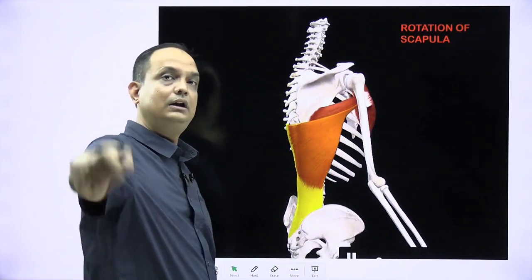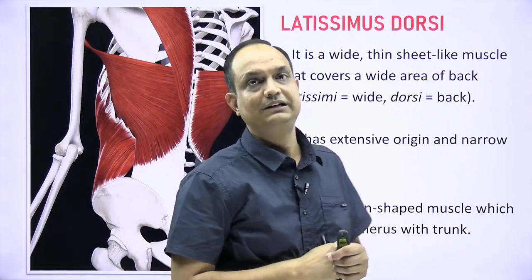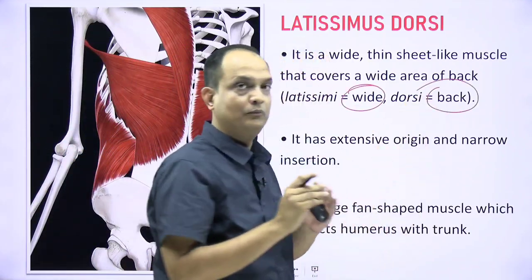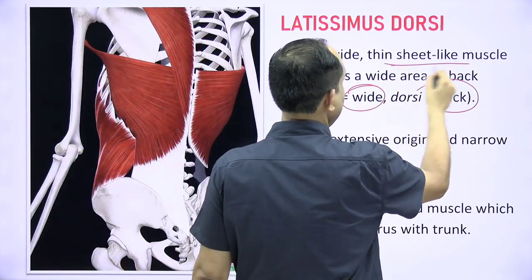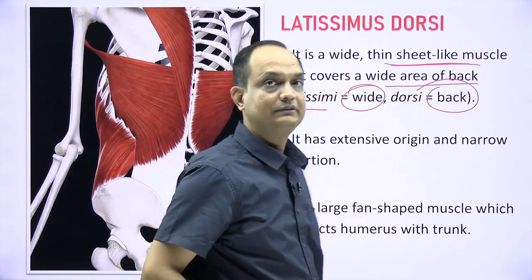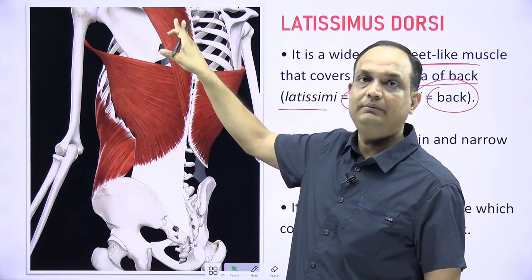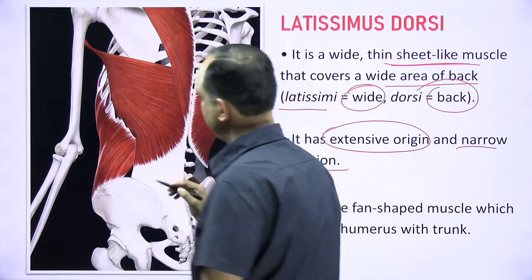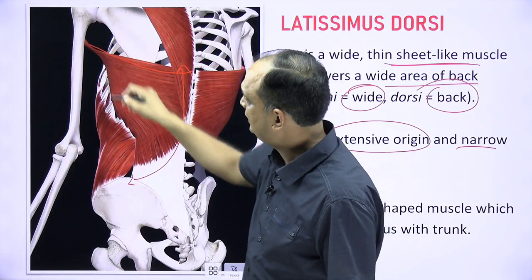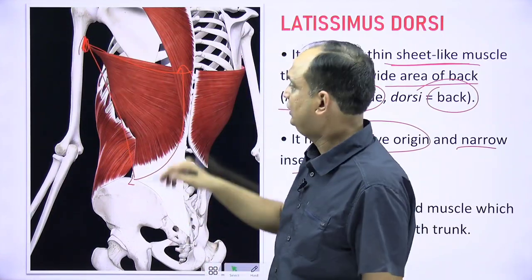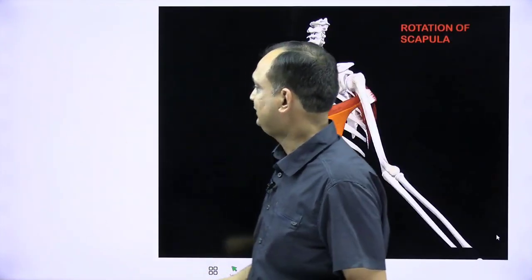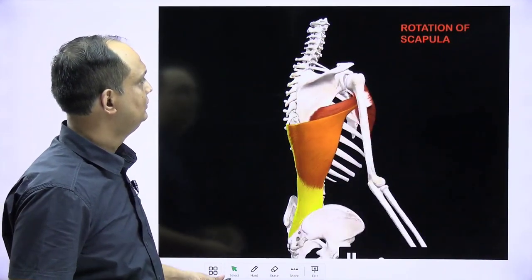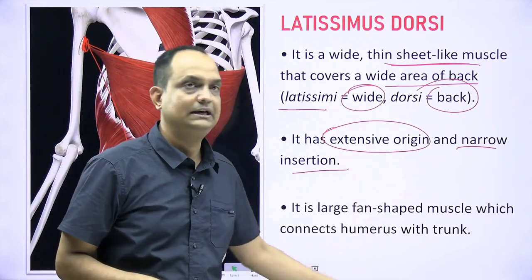The next muscle is latissimus dorsi. 'Latissimus' means wide and 'dorsi' means back, so it is a very broad, sheet-like muscle covering the lower back — the upper back is covered by trapezius and the lower back by latissimus dorsi. It is a large fan-shaped muscle that connects the humerus with the trunk, and is therefore also known as an axio-appendicular muscle.